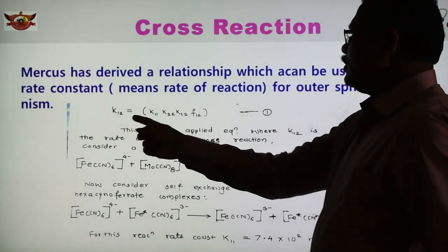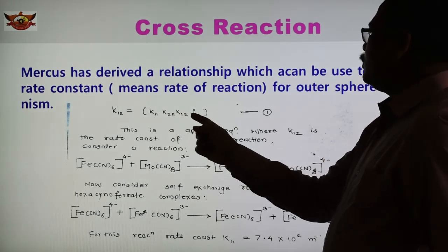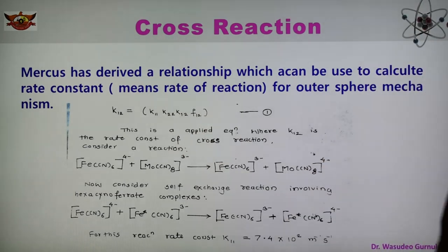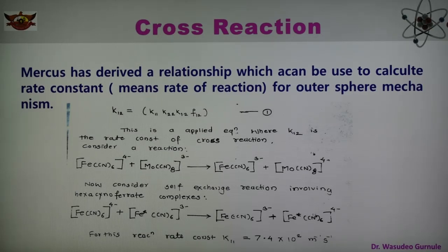So Marcus has given the relationship as equation number 1: K12 equals to K11, K22, K12, F12. This equation can be used to know the rate constant of the cross reaction. This is an applied equation and K12 is nothing but the rate constant for the cross reaction.